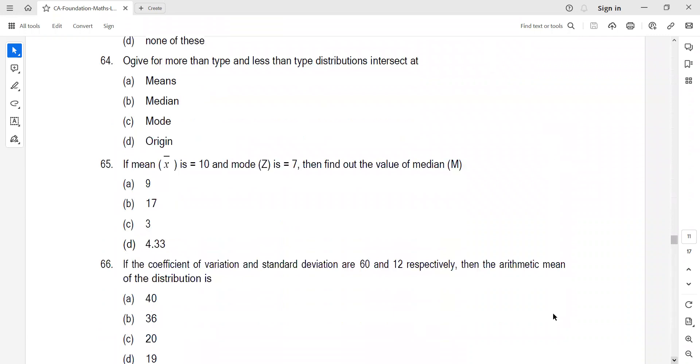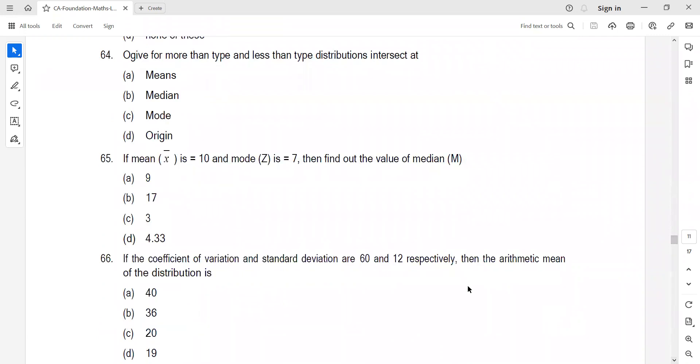Ogive for more than type and less than type distributions intersect at median. Next, again a question on property.